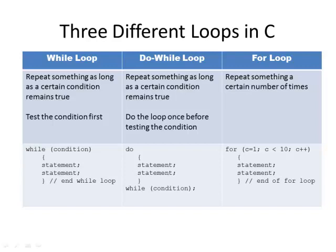Here's a quick rundown of the three different types of loops in C. The first loop is called a while loop, and with the while loop you repeat something as long as a certain condition is true, and you always test the condition first. The do-while loop also repeats something as long as a certain condition remains true, but the difference is the do-while loop will always do the loop at least once before testing the condition. And a for loop is when you want to repeat something a certain number of times.